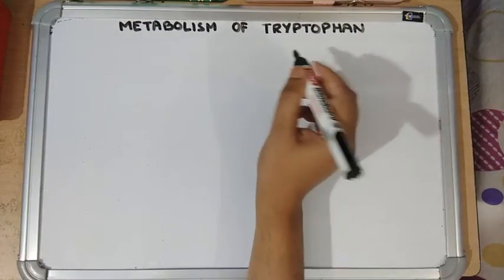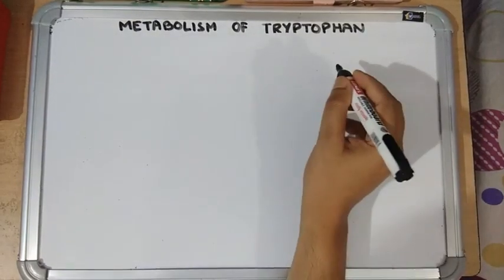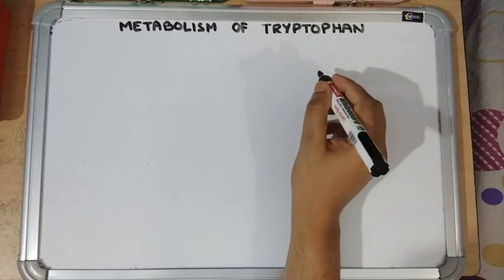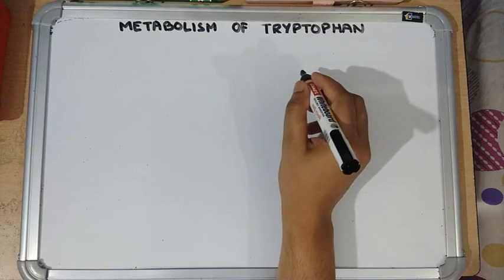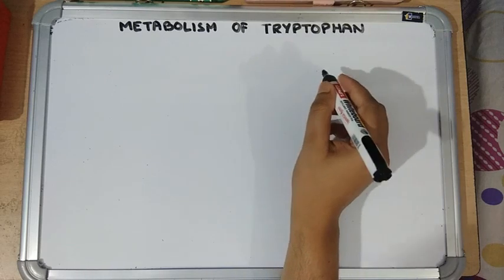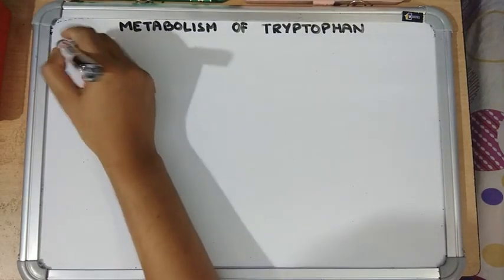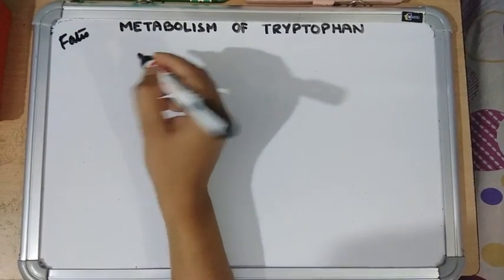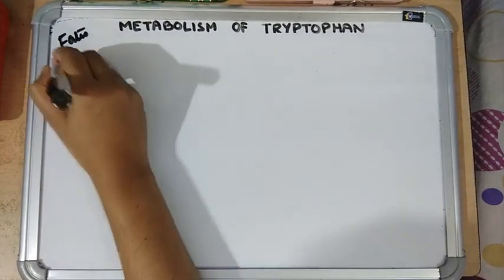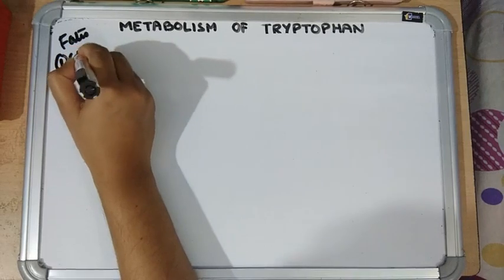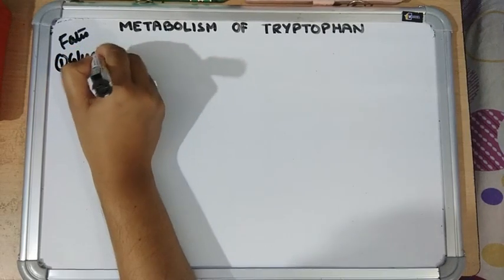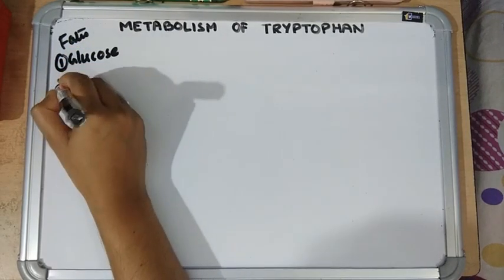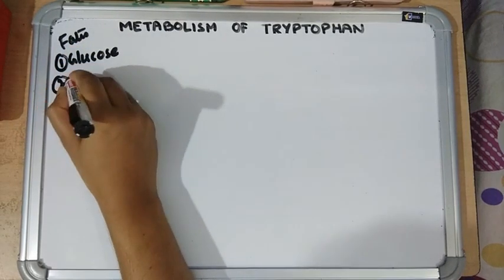Hello students. This topic is metabolism of tryptophan. It is an aromatic, essential, glucogenic as well as ketogenic amino acid. The main fates of tryptophan by catabolism are: it forms glucose, it forms ketone bodies.